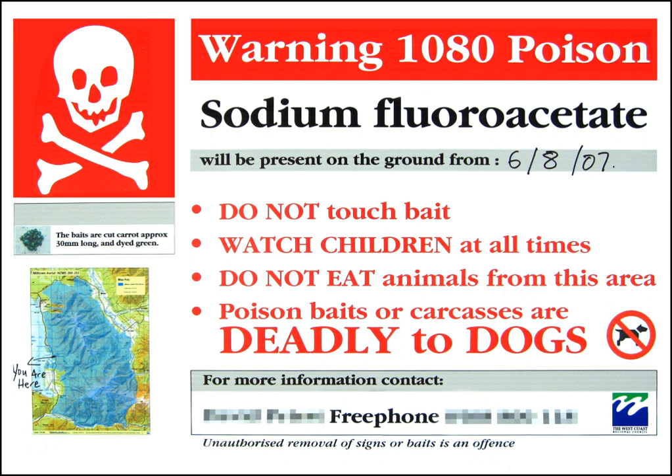Biologically synthesized organofluorines are few in number, although some are widely produced. The most common example is fluoroacetate, used as a defense against herbivores by at least 40 green plants in Australia, Brazil, and Africa. Other biologically synthesized organofluorines include omega-fluoro fatty acids, fluoroacetone, and 2-fluorocitrate. In bacteria, the enzyme adenosyl fluoride synthase, which makes the carbon-fluorine bond, has been isolated.